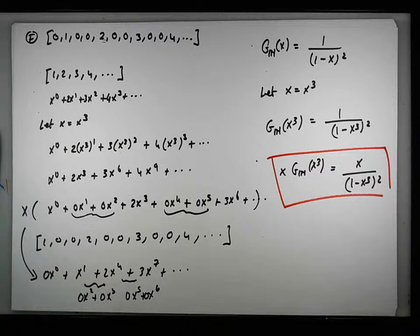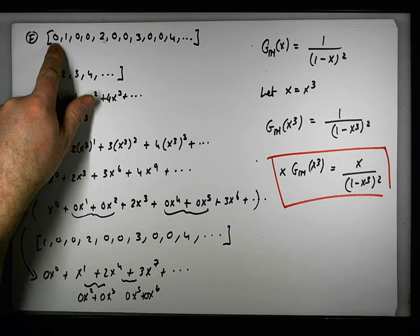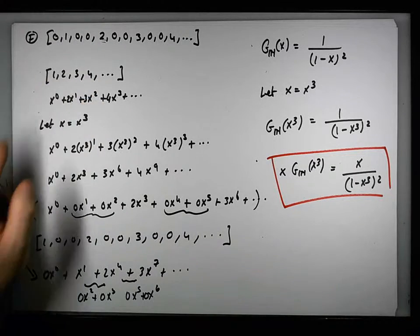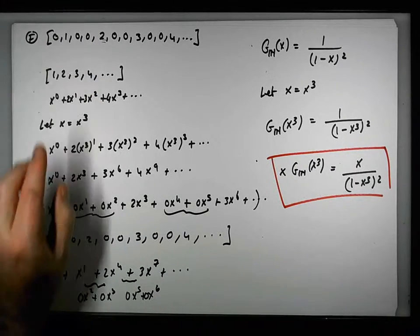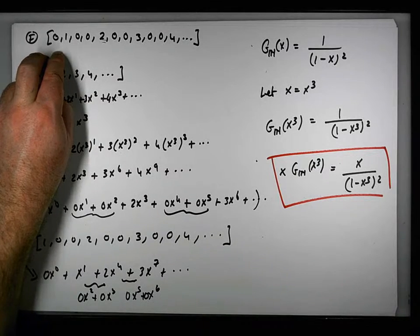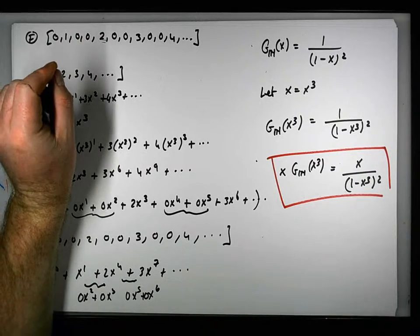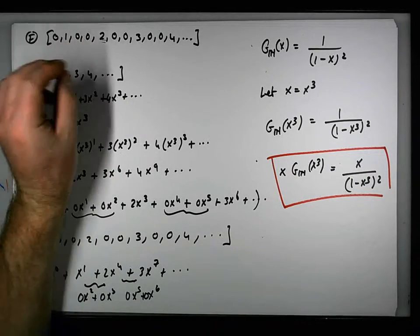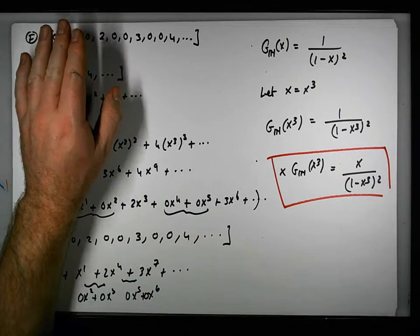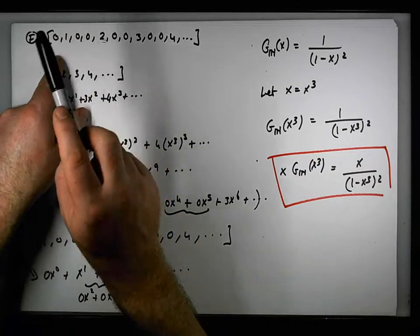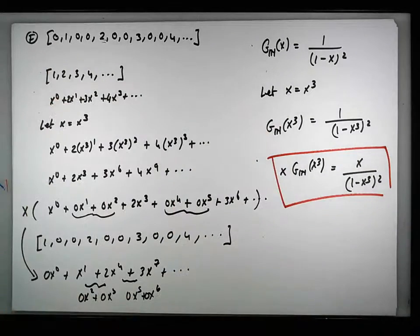There are three important points from these examples. First, to introduce a zero at the start, multiply your generating function by x; to introduce two zeros multiply by x squared; three zeros by x cubed, and so on. Second, to introduce one zero between terms substitute x squared; two zeros substitute x cubed; three zeros substitute x to the four. Third, to make something alternate between positives and negatives, substitute in negative x or the appropriate multiple of negative x.